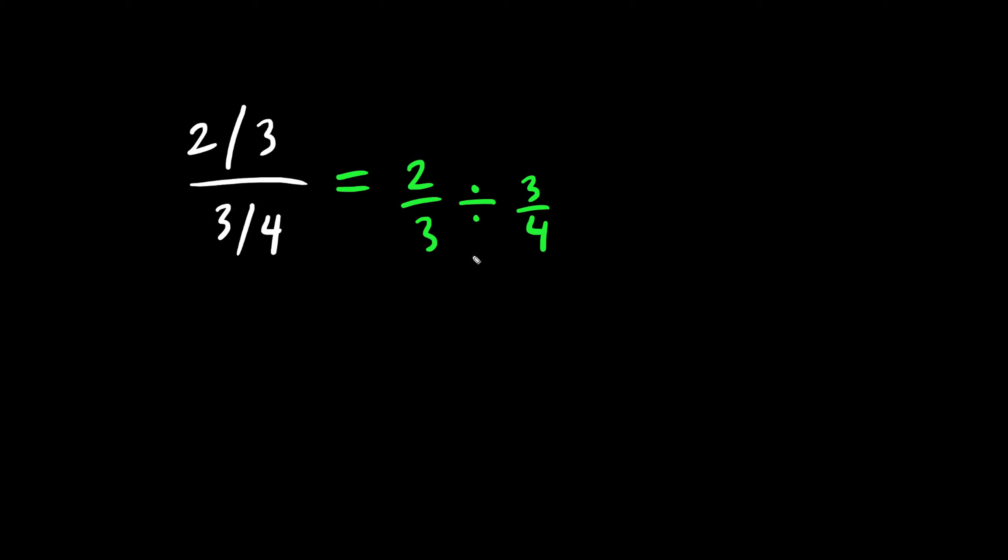So now this looks a lot easier. We rewrite two-thirds. Instead of dividing, we change it to multiply. Multiply by the reciprocal, four-thirds. And when we have a fraction times a fraction, we multiply across. Two times four is eight and three times three is nine. This is our answer.